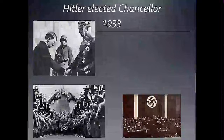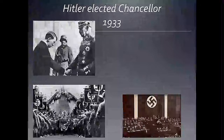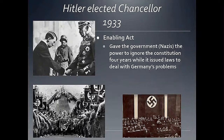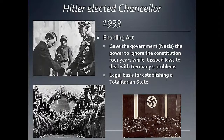President Von Hindenburg and conservatives had hoped to form a coalition government with the Nazis, believing they could control Hitler and push a conservative agenda. However, circumstances quickly changed when a fire broke out in the Reichstag. Hitler used this crisis to convince parliament to pass the Enabling Act, which gave the Nazi-majority government the power to essentially ignore the German constitution for four years while issuing laws to address Germany's problems. This legal foundation gave Hitler and the Nazis the basis for establishing a totalitarian state in Germany.